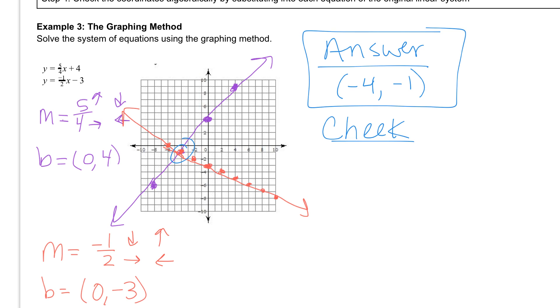So to check our answer to make sure we graphed it right and that everything works, we need to plug in our x value and our y value into both of these equations to make sure they work. So if I check the first equation, remember y is negative 1 and x is negative 4. So I would get negative 1 equal to 5 over 4.